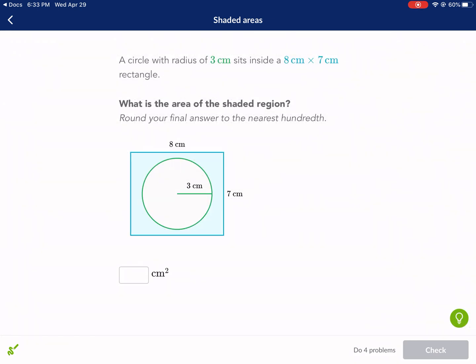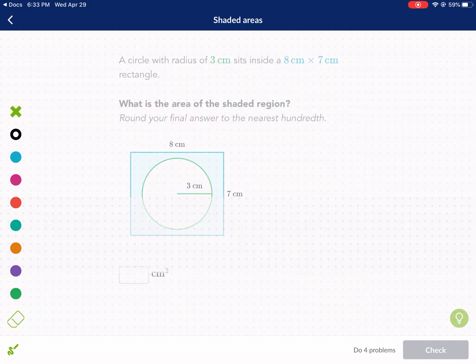So let's go ahead and take a look at this problem. It says a circle with radius of 3 centimeters sits inside an 8-centimeter and 7-centimeter rectangle. What is the area of the shaded region? It says round your final answer to the nearest hundredth, so we're definitely going to make sure we have a calculator handy for this.